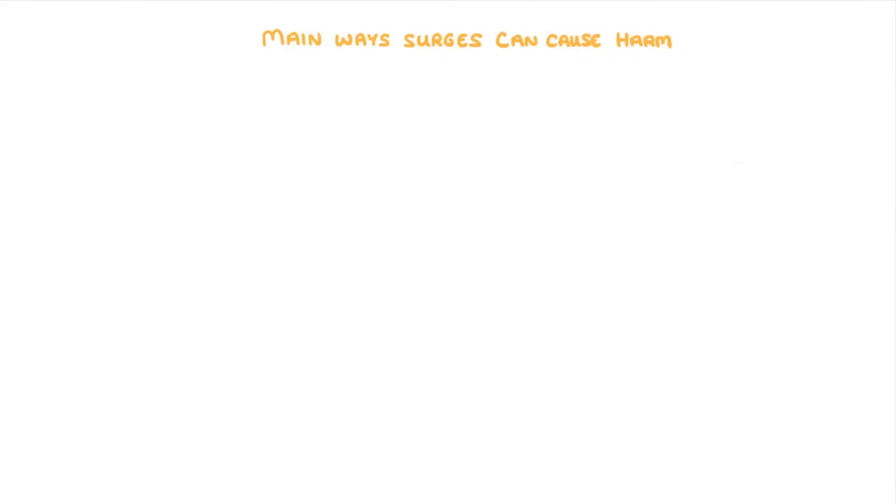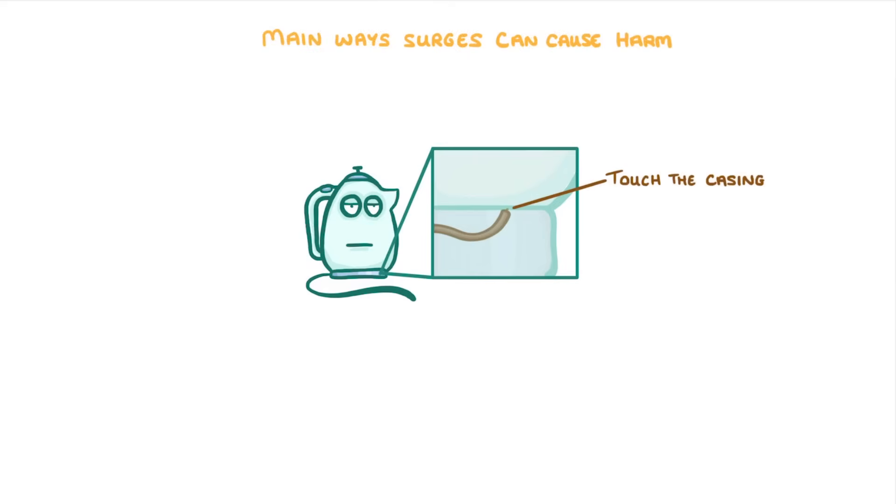One of the main ways that surges can cause harm is that if the live wire comes loose inside an appliance, it can touch the casing. This means that if a person touched the casing anywhere on the appliance, they get a big electric shock.